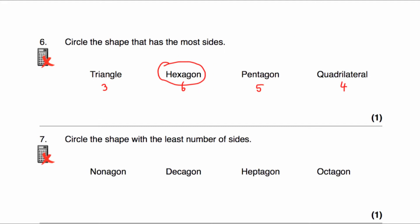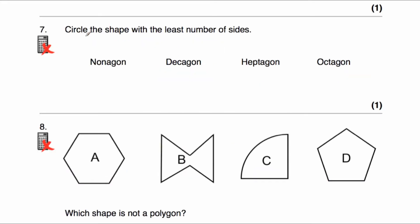Question number seven: circle the shape with the least number of sides. A nonagon has nine sides, a decagon has ten sides, a heptagon has seven sides, and an octagon has eight sides. So the shape with the least number of sides is the heptagon.